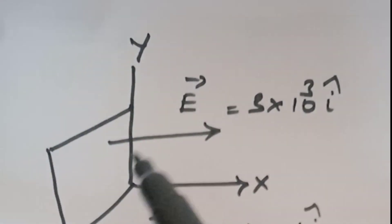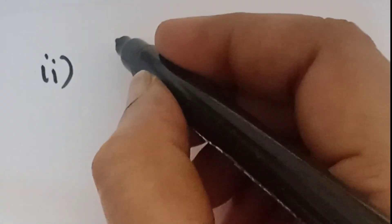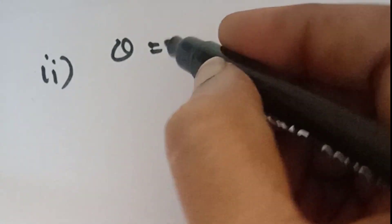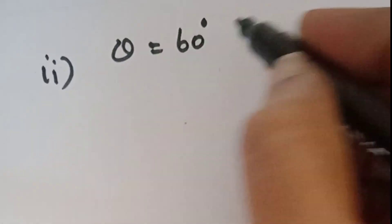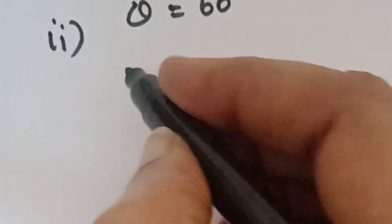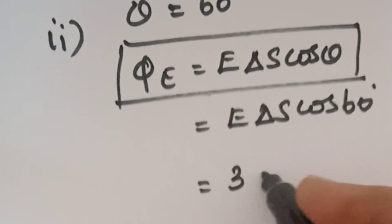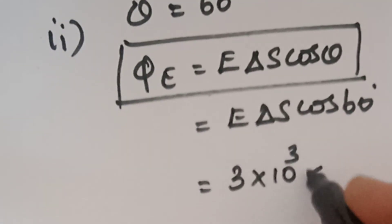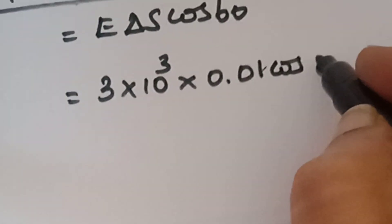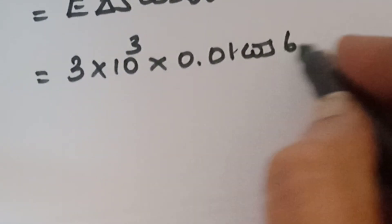Therefore cos theta is 60 degree. Therefore phi is equal to E del S cos 60 degree. Which is equal to 3 into 10 power 3 into 0.01 cos 60 degree.